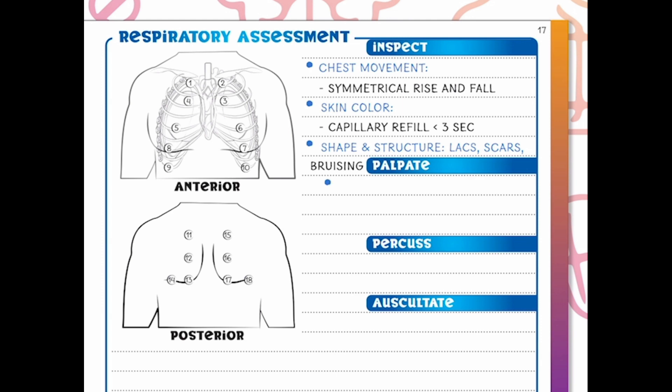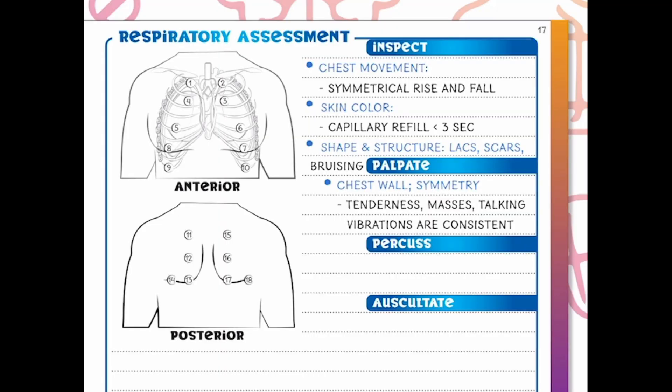Now that we've inspected, we're going to move into palpation — a more invasive step. We want to feel the thoracic area and assess the chest wall for symmetry on both sides. Are we feeling any tenderness or masses? Are there any talking vibrations that are consistent? For example, placing your hands on the sides of the ribs and when the patient speaks, you feel that vibration strongly on one side but very dull on the other. That symmetry is always a continuous theme.